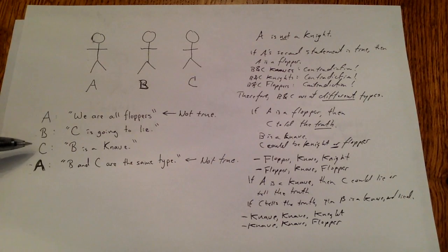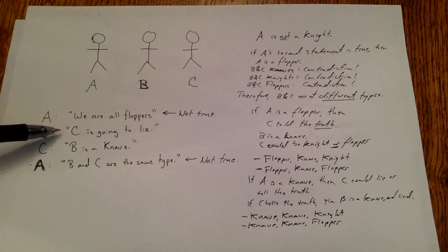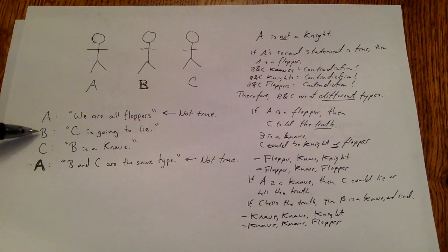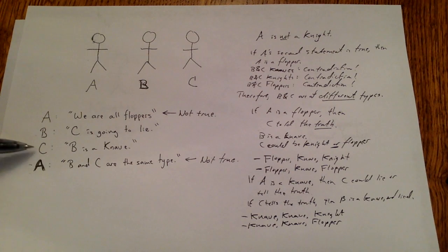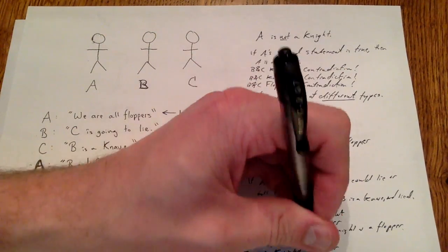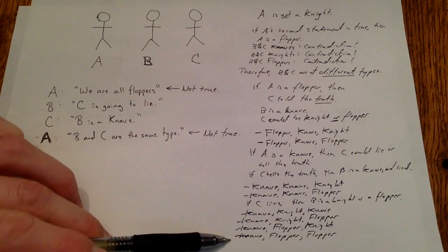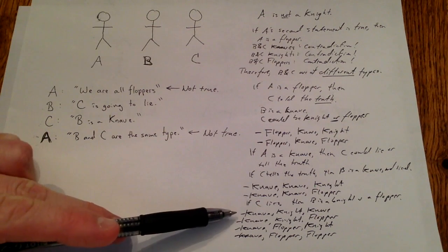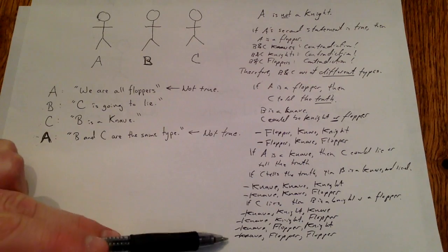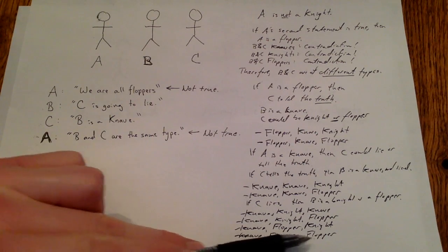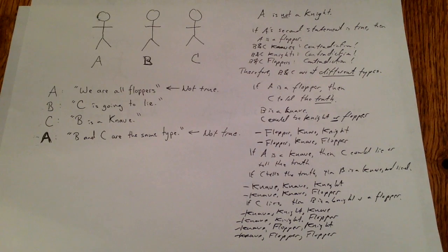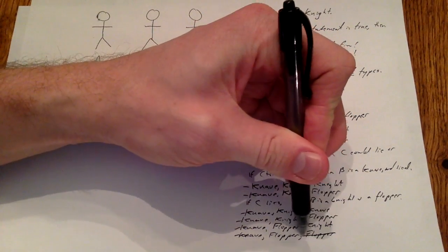If C is lying, then B is not a knave, and B is telling the truth. If B is telling the truth about C lying, that's consistent. So B is either a knight or a flopper, and C is either a knave or a flopper. I've now evaluated all possible situations where B is telling the truth and C is lying. However, the combination knave-flopper-flopper would mean B and C are the same type, which we've already determined is not possible. Therefore, that combination is eliminated.